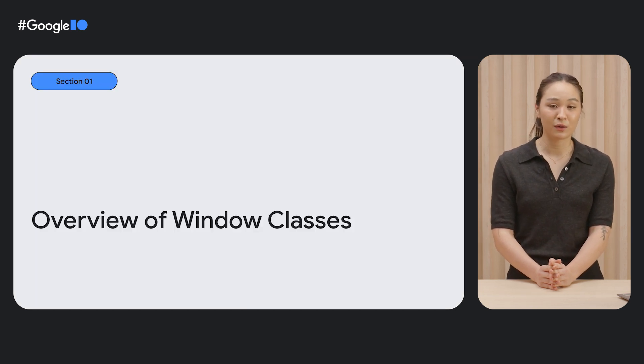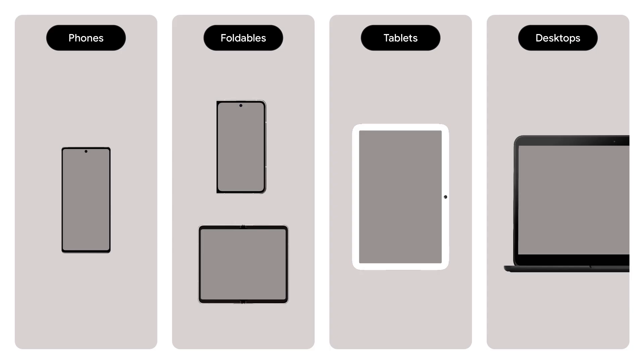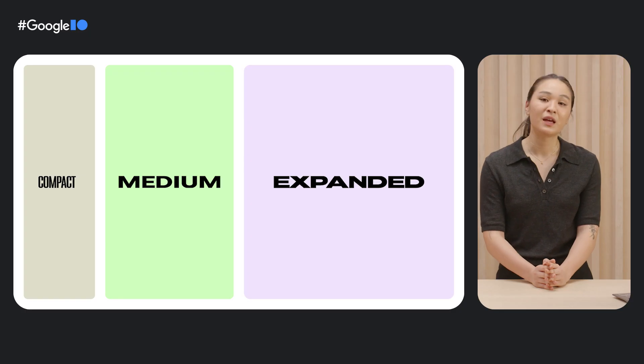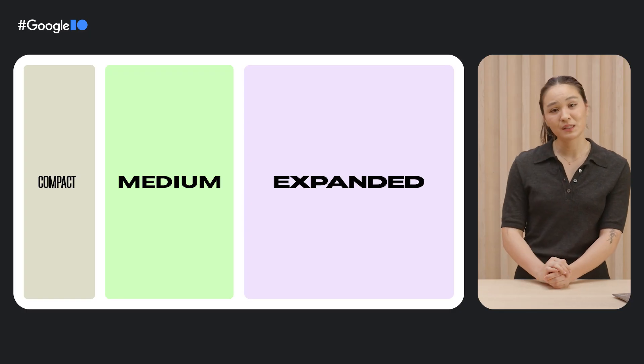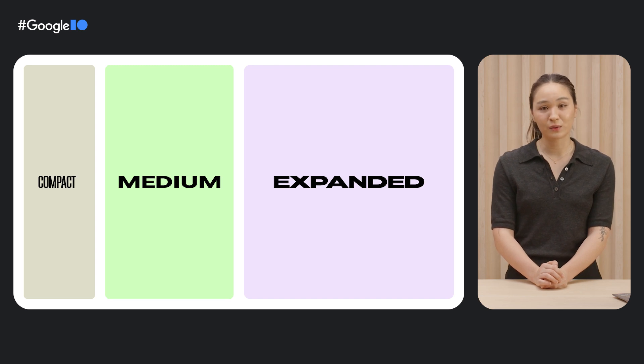Let's start with an overview of our window classes. Devices come in all sizes and shapes, so rather than designing for an ever-increasing number of display states, we created window-width size classes to ensure layouts work across a range of devices. We defined three window-width breakpoints by looking at what kinds of experiences people were having, and cataloged all screens across platforms in our ecosystem.